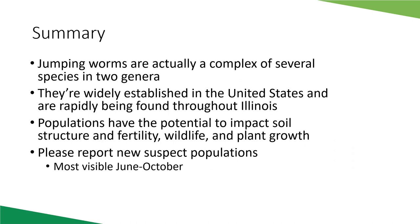In summary, jumping worms are actually a complex of several species in two genera. They are widely established in the United States and are rapidly being found throughout Illinois. We know they have the potential to impact soil structure, soil fertility, wildlife, and plant growth — which is why we're concerned. We're asking people to report particularly new counties where jumping worms haven't been confirmed, to help us better understand where they're at in the state. You're most likely to see them from June through October.